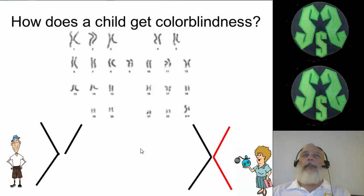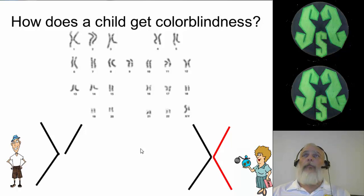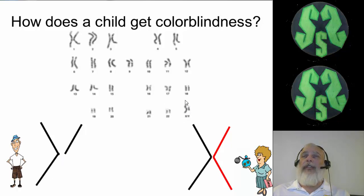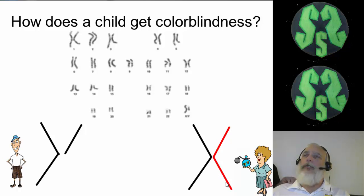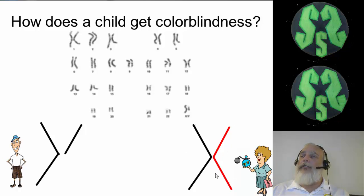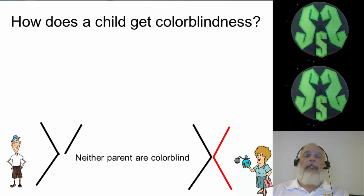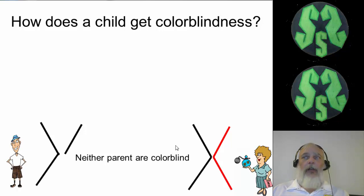Now that we know a little bit about colorblindness — and some of you in the viewing audience may be colorblind as well — let's talk about how one becomes colorblind genetically. Here's the dad — he has his X chromosome and Y chromosome from the 23rd pair. Here's mom's X chromosome and another X chromosome. Neither parent is colorblind; both can see colors normally. However, the mom is what's called a carrier. Her dad was colorblind and she received one allele for colorblindness on one X chromosome.